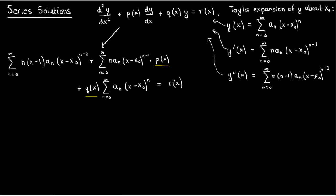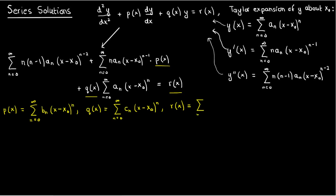Now p(x), q(x), and r(x) seem to just be sitting there, but since they're presumably continuous and differentiable functions of x, it's also possible to express them as power series. So p(x) is the sum from n equals 0 to infinity of b_n times (x−x₀)^n, q(x) is the same thing except the coefficients are c_n, and r(x) is the same but with coefficients d_n.